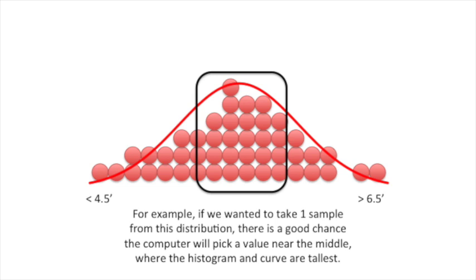For example, if we wanted to take one sample from this distribution, there's a good chance the computer will pick a value near the middle where the histogram and curve are tallest.